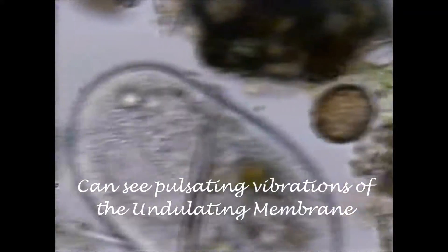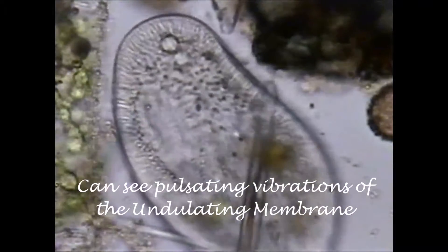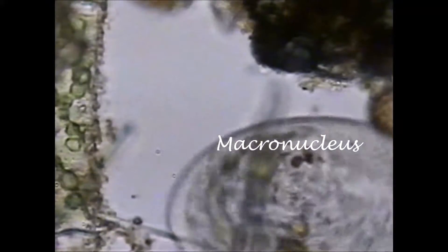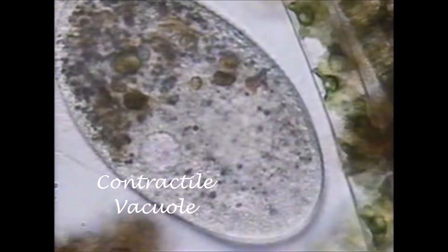Food is swept into the cell by these structures. A macronucleus can barely be seen. It does have a micronucleus which is not visible. A single contractile vacuole can be seen expelling excess water from the cell.